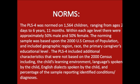The PLS-4 was normed on 1,564 children ranging from ages 2 days to 6 years, 11 months. Within each age level, there were approximately 50% male and 50% female. The norming sample was based upon the 2000 U.S. Census of Population and included geographic region, race, and the primary caregiver's education level. Additional characteristics included the child's learning environment, languages spoken, English dialects spoken, and the percentage of the sample reporting identified conditions and diagnoses.